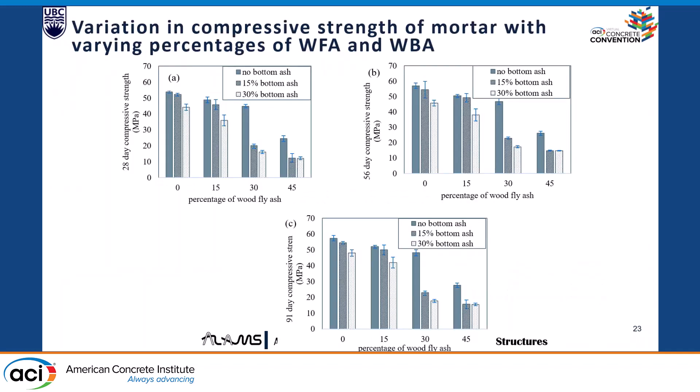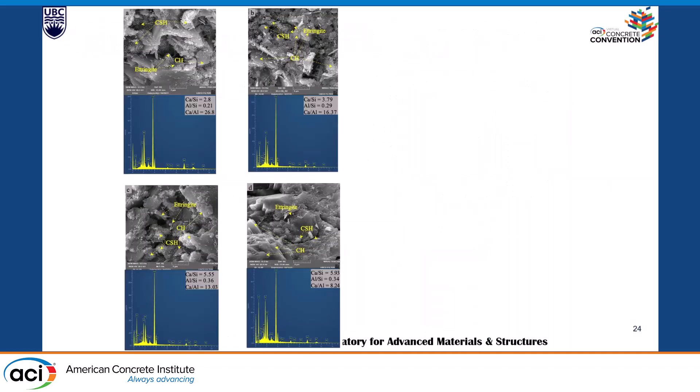These are the results of the mortars made using wood ash. We used 0, 15, 30, and 45% of wood fly ash as cement replacement, and 15 and 30% of bottom ash as sand replacement. We can see a gradual decrease in strength, due to the presence of weak biochar elements. Up to 30% replacement, the results were not significantly variable, but at 45%, the strength decreased quite suddenly. The same trend was observed for wood bottom ash.